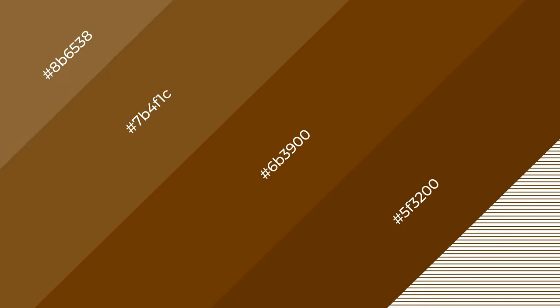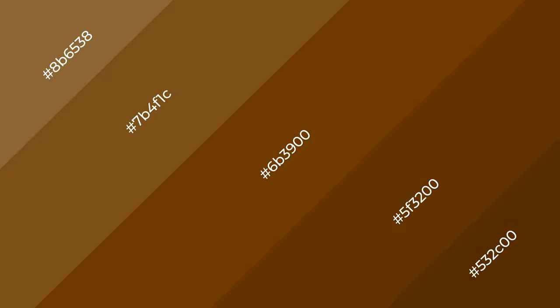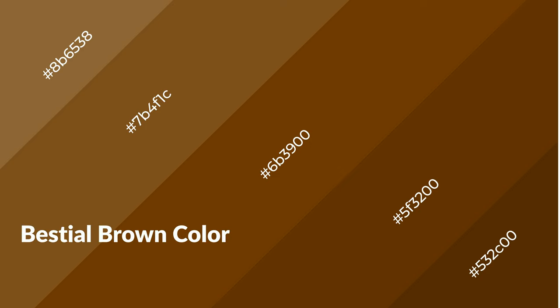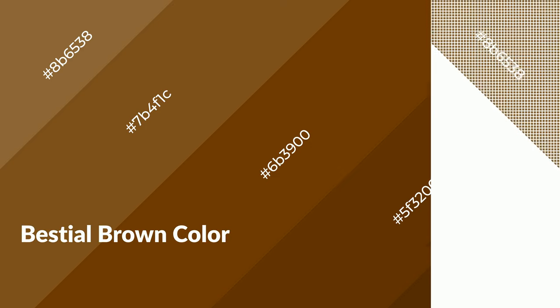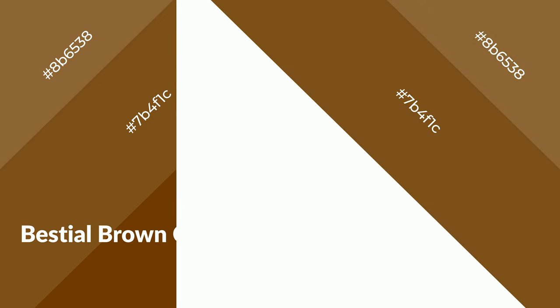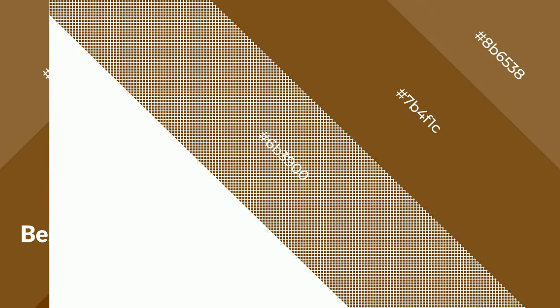To generate shades of a color, we add black to the color. It is used in patterns, 3D effects, and layers. Shades create depth and drama. Bestial brown is a warm color and it emits cozier and active emotions.